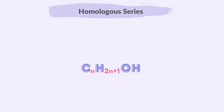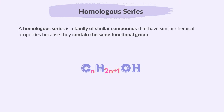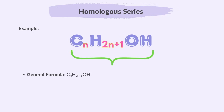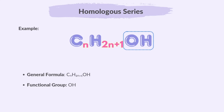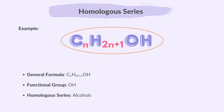A homologous series is a family of similar compounds that have similar chemical properties because they contain the same functional group. For example, the general formula CnH2n+1OH applies to all alcohols in this family. The functional group is the OH part, and the homologous series is the family to which this general formula belongs — the family of alcohols.